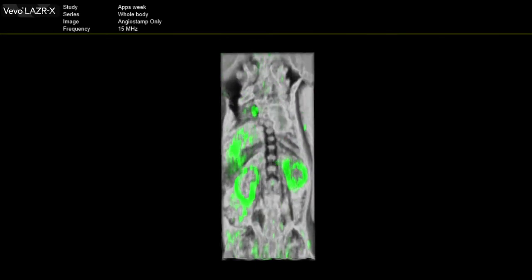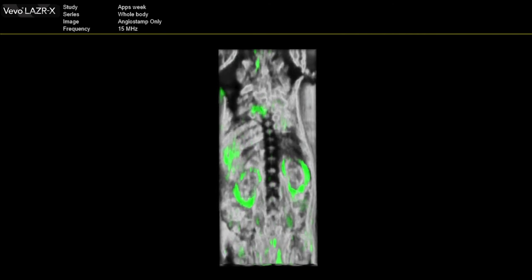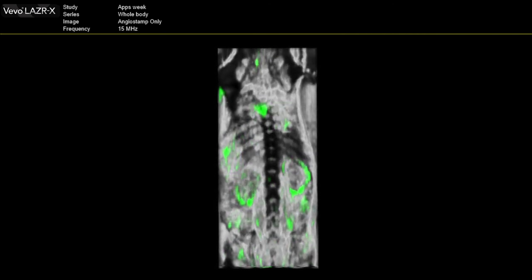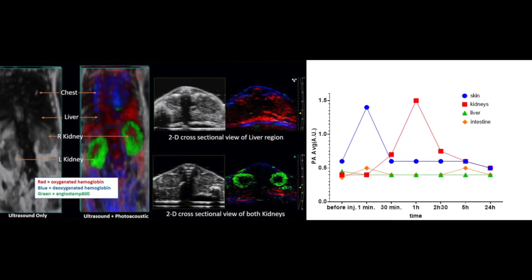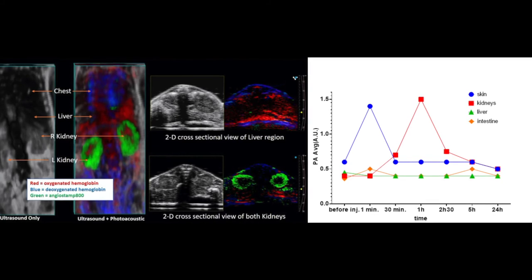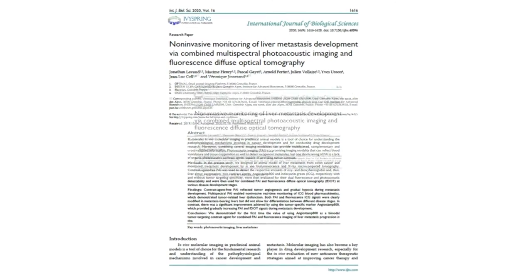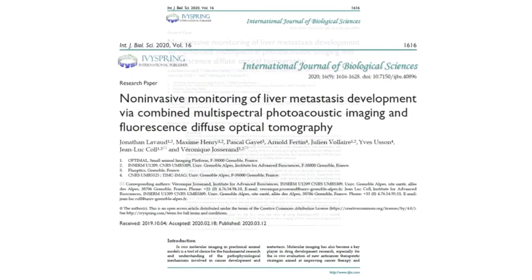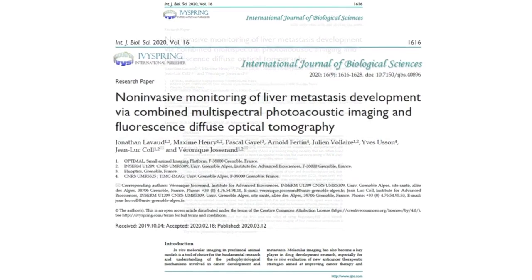Thanks to one of VisualSonics' latest innovations, the Vivo Laser X allows biodistribution studies of compounds of interest, such as Angiostamp 800, to be carried out by combining photoacoustic and ultrasound whole-body imaging. This image then provides information on the ability of the compound to be eliminated by the body. Future research will explore different tumor models and will continue to rely on combining photoacoustic imaging with other modalities to give a much broader picture of the pathology.